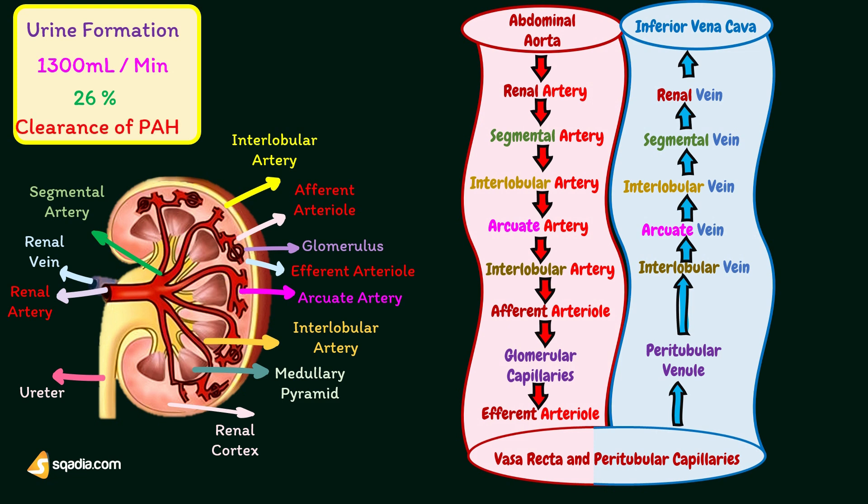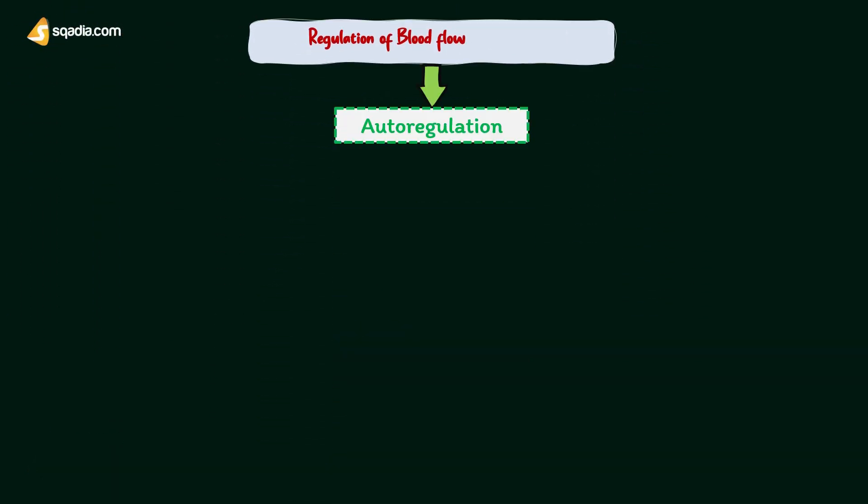Blood flow to the kidneys is measured by using plasma clearance of para-aminohippuric acid. Blood flow is regulated mainly by autoregulation; the nerves innervating the renal blood vessels do not have any significant role in this.